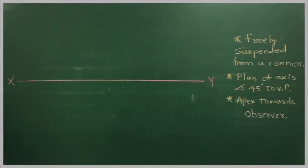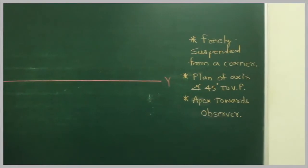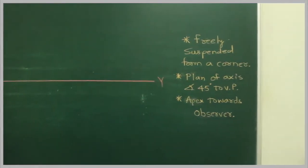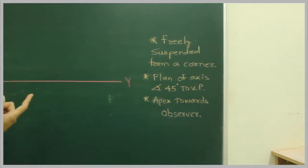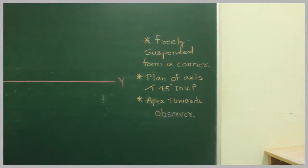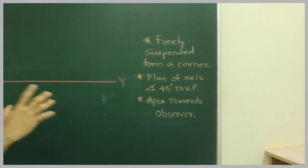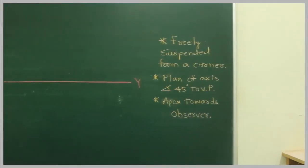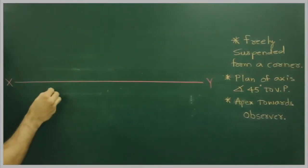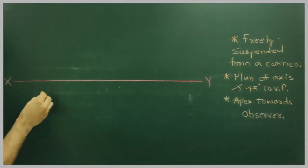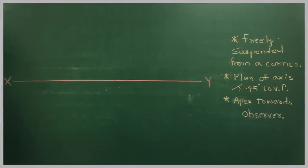In this problem, it is freely suspended from a corner and they want us to draw plan of axis. So what we will do, first we will draw a square pyramid of side 14.